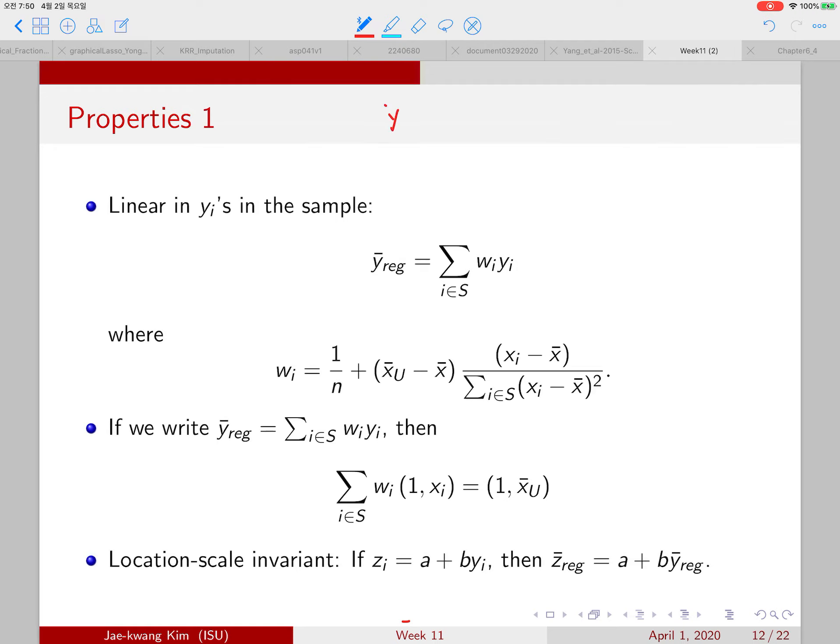Note that the y bar regression estimator is b hat 0 plus b hat 1 x bar u, and this is linear in yi in the sample. So this should be linear, something like this. Now let's write it specifically. The specific weight is actually this form. So we'll check about it.